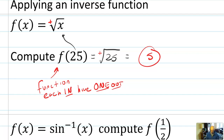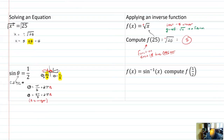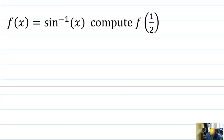We've made some sacrifices — we kind of lost an answer, specifically negative five. But what we gained is that square root of x is a function, which it was not before. We're going to do a similar thing with inverse trig. We're going to lose some of the extra answers by restricting the outputs, and what we gain is that it will now actually behave as a function — we can compute its graph and find a single answer.